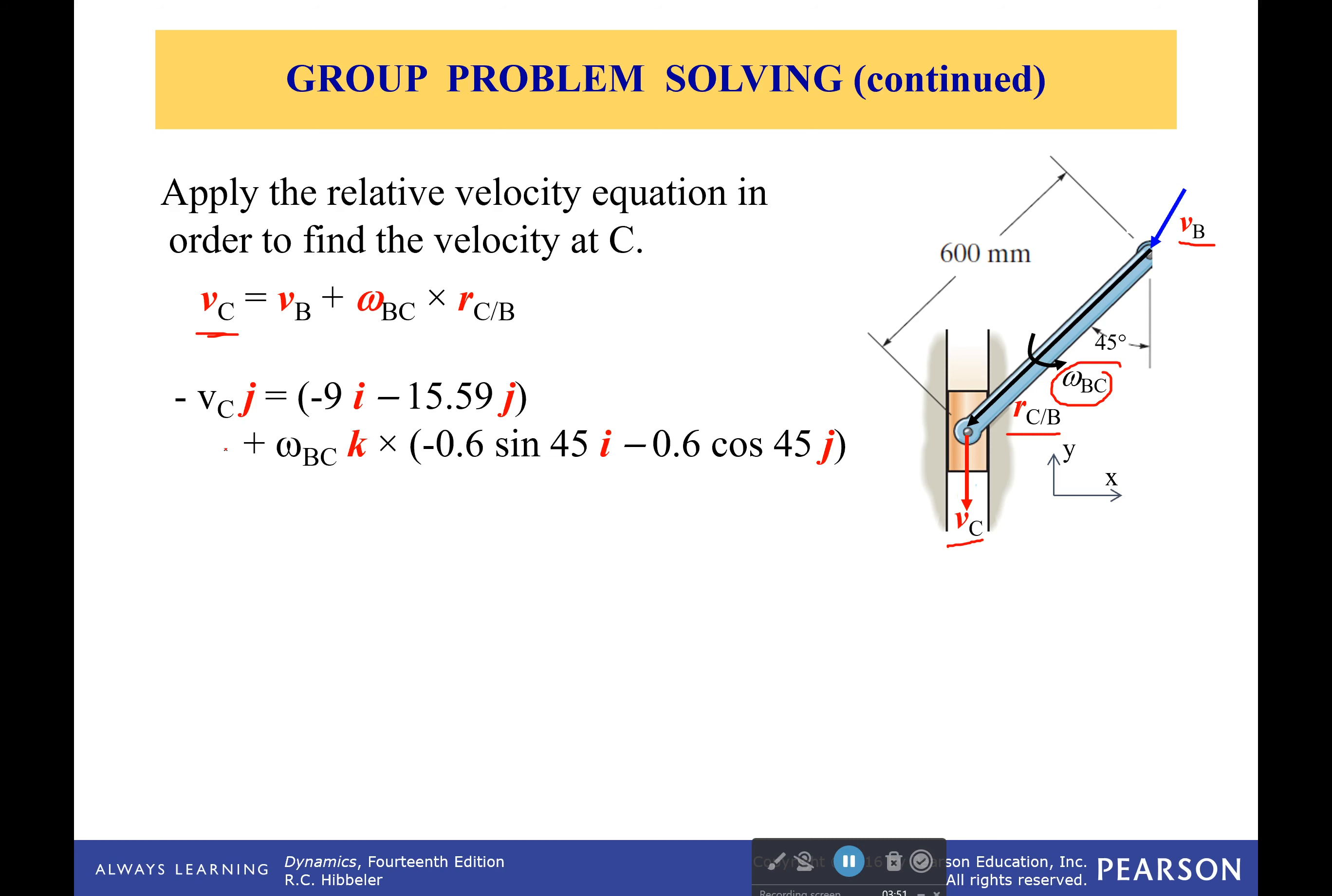So the velocity of C is going to be equal to, well, here's the velocity of B, which we already calculated. Then we have to do the cross product of our angular velocity, which we don't know, with our position vector, which we do know. And so we have our angular velocity in this. We take the cross product.